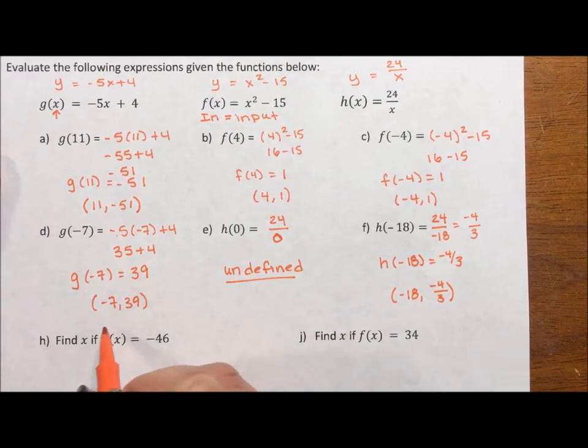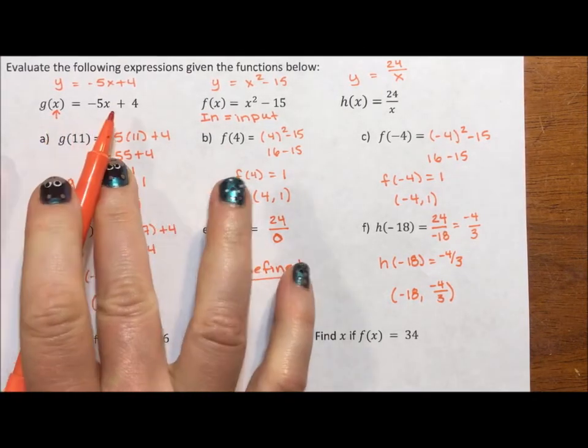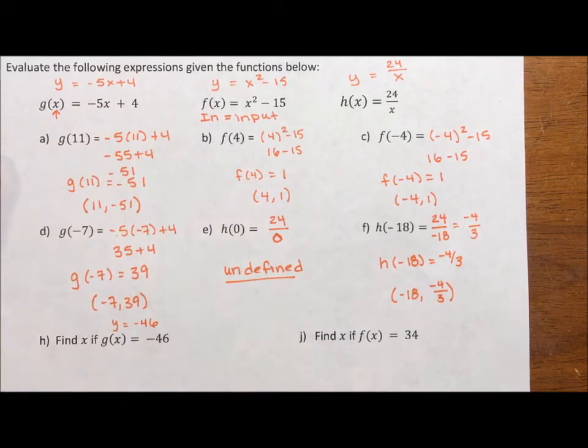This is saying find x if y is equal to -46, specifically in our first function. So g(x) is -5x + 4. And we want to know when does that equal -46?